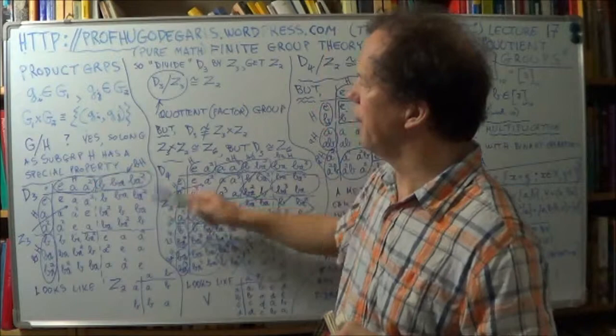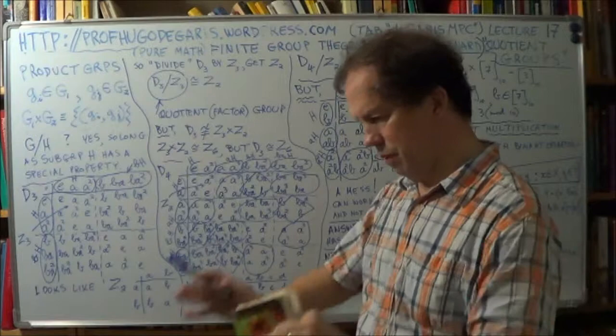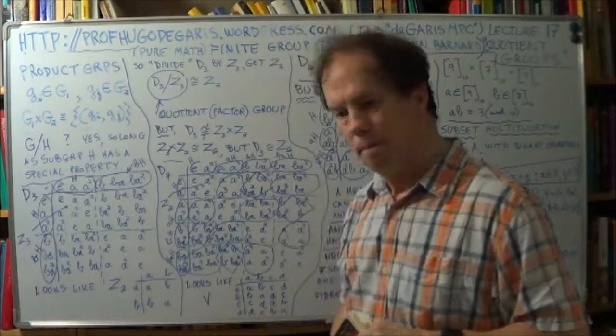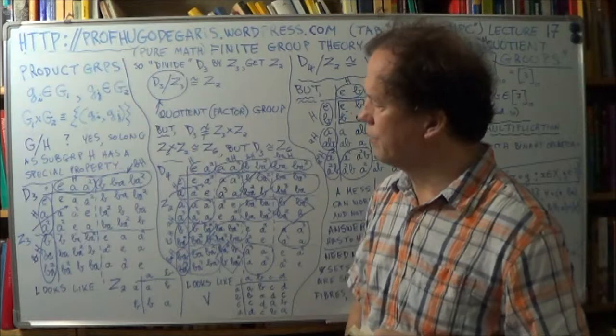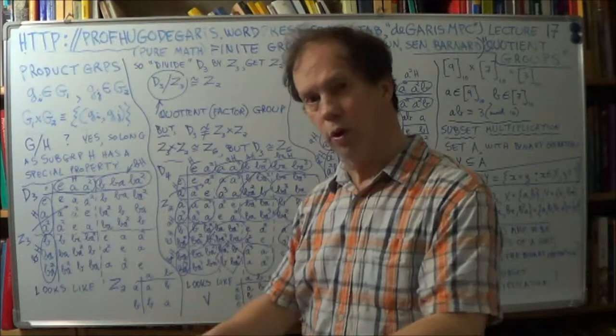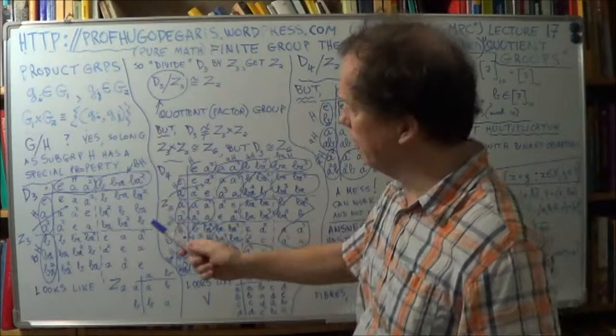Alright? Well, so this notion of how to divide a group by a smaller group, we're leading into it now. How was it discovered? How did the mathematicians, the researchers looking into this possibility, how did they come across this possibility of dividing one group by a smaller one, to get a smaller group than the one you started with?